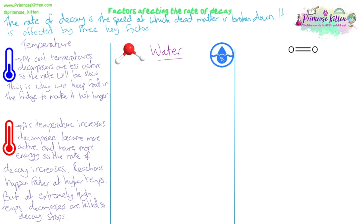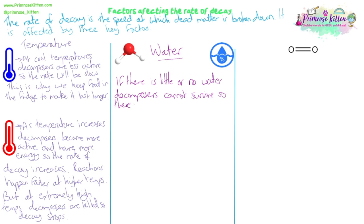The next factor that affects the rate of decay is water. If there's little to no water, decomposers basically can't survive, so there's no decay. Like all organisms they need water to survive, and as the amount of water increases so does the rate of decay. Many decomposers need to absorb nutrients dissolved in water — they secrete enzymes, break down nutrients into small molecules, and those molecules need to dissolve in water to be absorbed. Processes like mummification of bodies and drying out meat and fish — such as biltong or dried fish — help to prevent decomposition and preserve tissues for a long time.